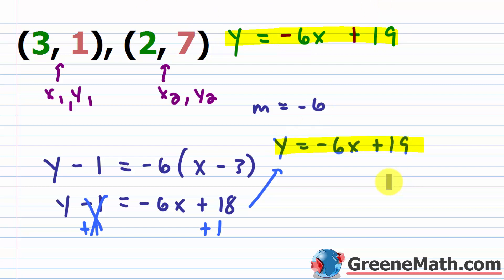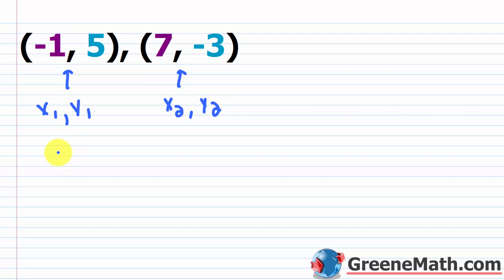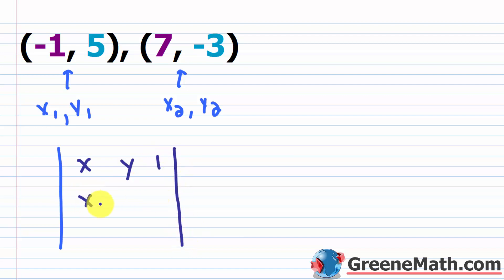Using the determinant method is probably a little faster, especially if you use the shortcut for determinants, because you don't have to calculate the slope first and then plug in to get your equation. Let's take a look at another example. We have negative one comma five and seven comma negative three. Label the first as x₁, y₁ and the second as x₂, y₂ — it doesn't matter how you label them, you get the same answer.